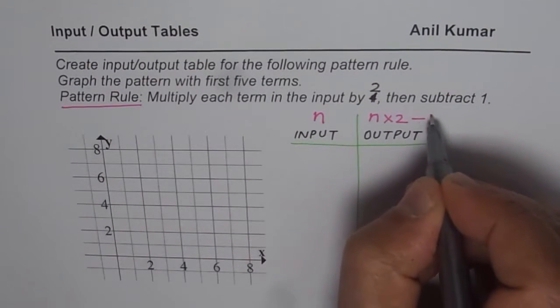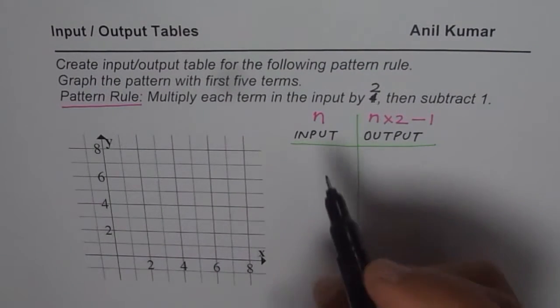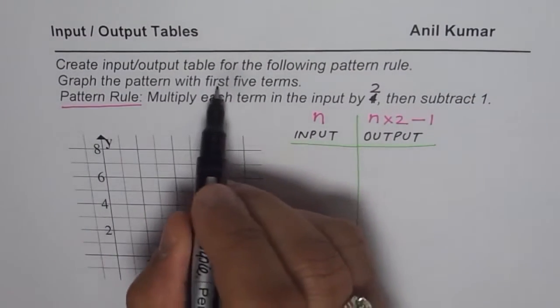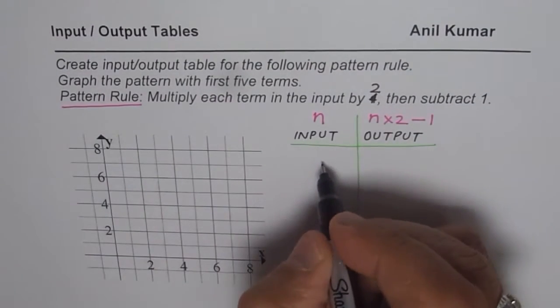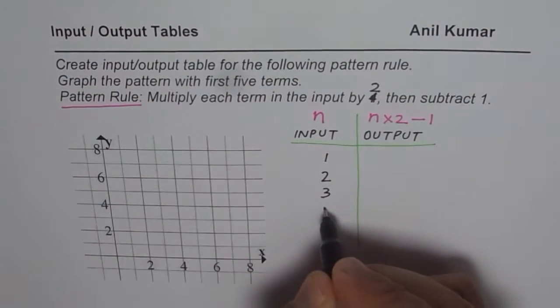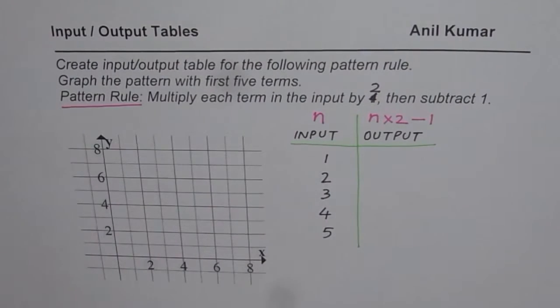Let us write down different inputs. We need first 5 terms. First 5 terms means that the input will be 1, 2, 3, 4, and 5. So these are my first 5 terms.